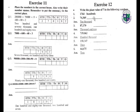Exercise twelve: write the place value of seven in the following numbers. One thousand seven hundred and sixty-four — 1,764. The value of seven is hundreds.